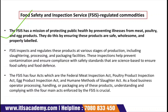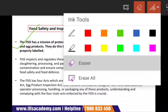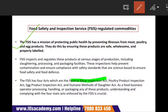FSIS has four acts: the Federal Meat Inspection Act, the Poultry Products Inspection Act, the Egg Products Inspection Act, and the Humane Methods of Slaughter Act. The method used for slaughtering is very important to understand. As a food business operator processing, handling, or packaging any of these products, understanding and complying with these four main acts is crucial.